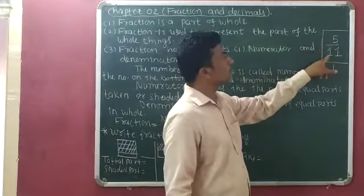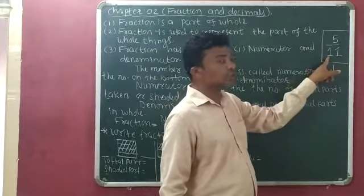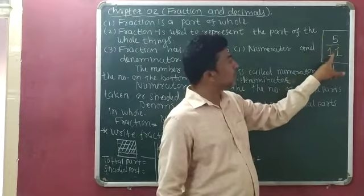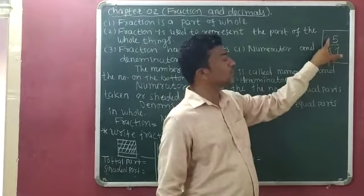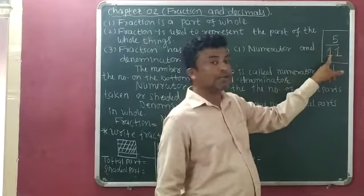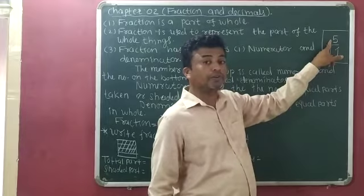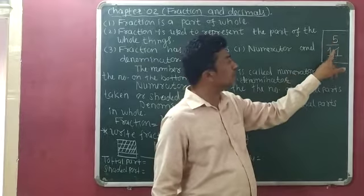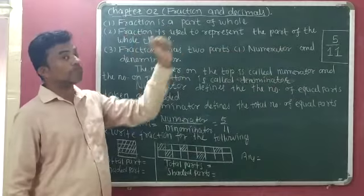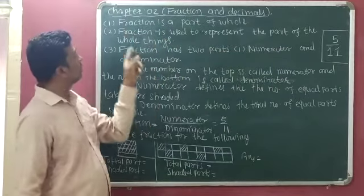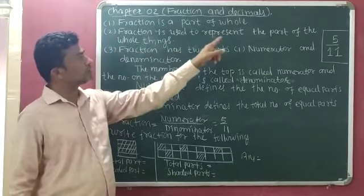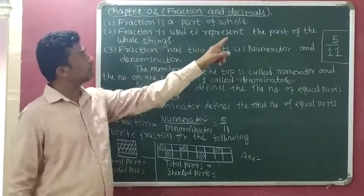For example, 5 by 11. So 11 is the whole and 5 is a part — means out of 11, we have to represent 5 parts. So fraction is a part of whole and it is used to represent the part of the whole things.